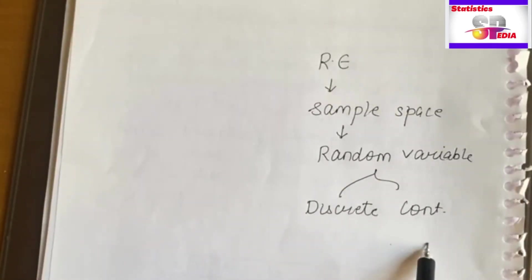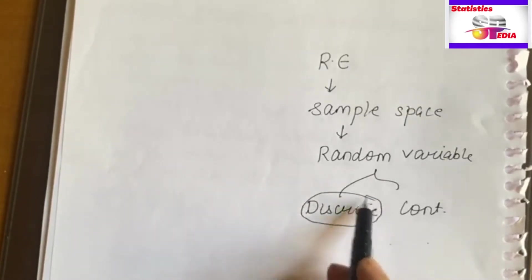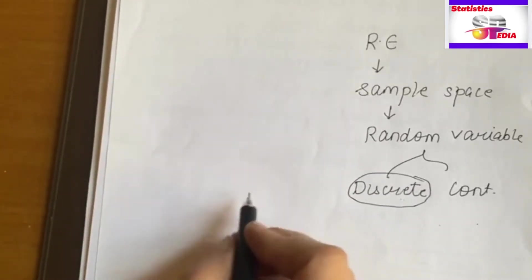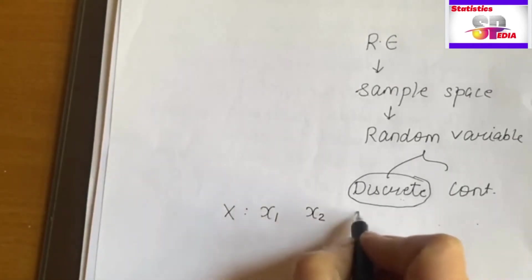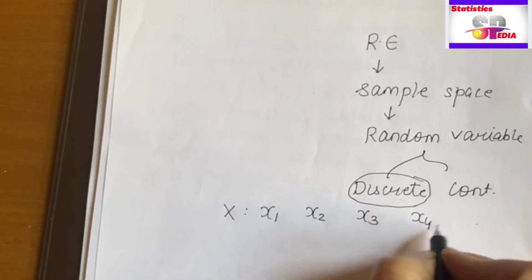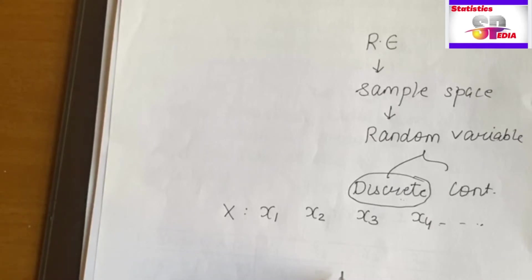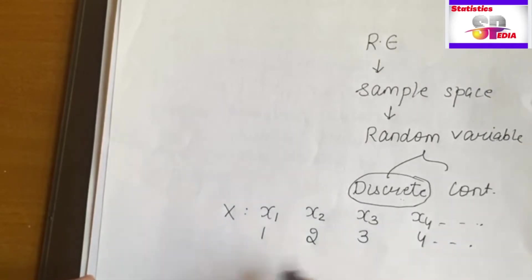In today's lecture we discuss about the probability distribution of the discrete random variable. Now let's understand what we mean by probability distribution. You all know that X is a random variable. Suppose it takes countable values — 1, 2, 3, 4. For example, the number of students in a class, or the number of cars in a parking lot, or the number of heads obtained in tossing a coin. All of these are countable — which you can arrange in a sequence.